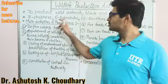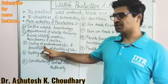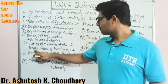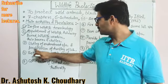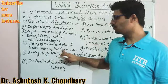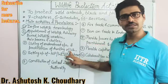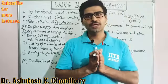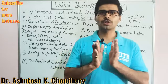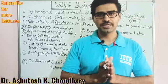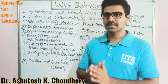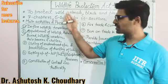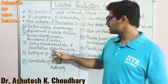The listing of these species and the prohibition of hunting of wildlife species — hunting of certain species is totally prohibited in India — all of this comes under the Wildlife Protection Act 1972.